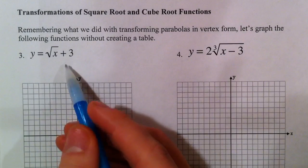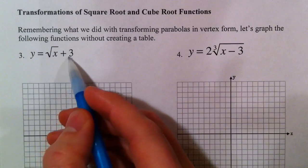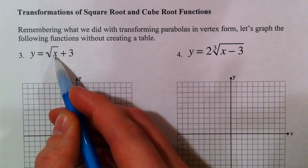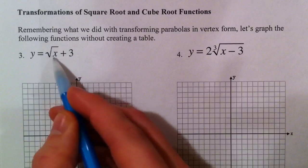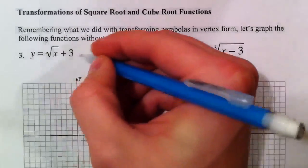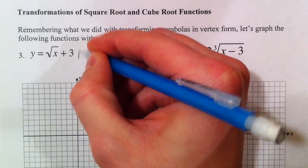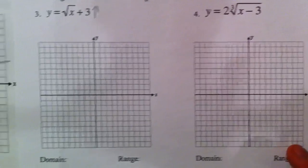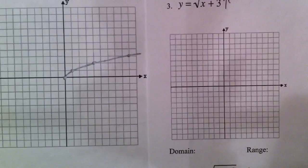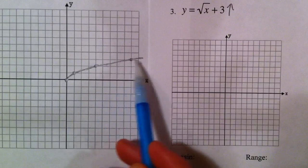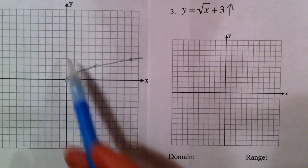This first one — notice that the plus three is on the outside of the square root. So after you take the square root, you're going to add three to everything. When it's on the outside like that, it just shifts the whole graph up. So we look back at our old graph and take every single point and shift it up three.